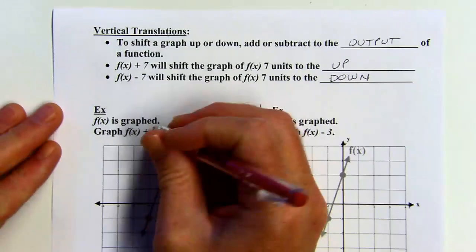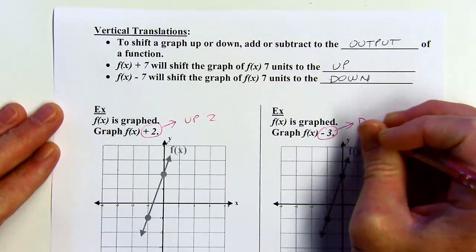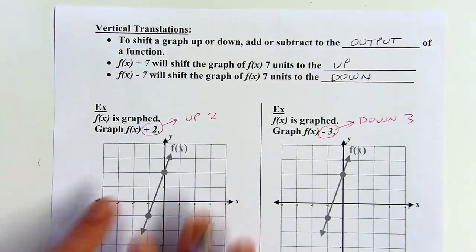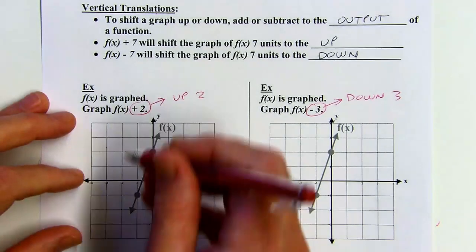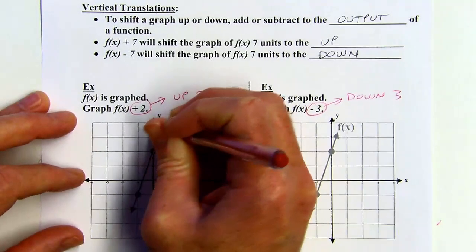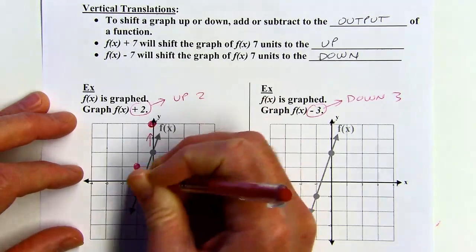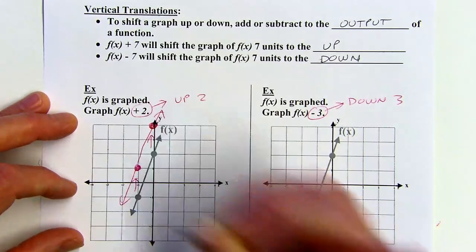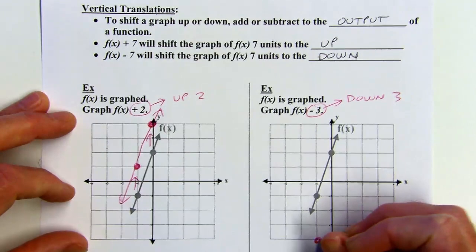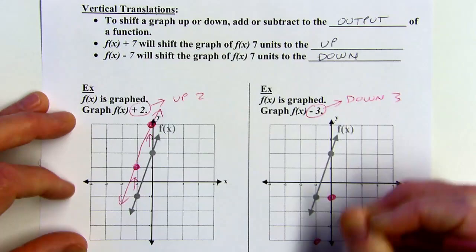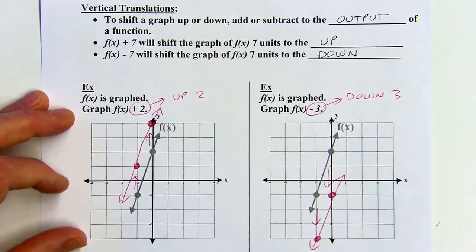Let's try this. With the plus 2 here, everything's going to move up 2. With the minus 3, everything's going to move down 3. I'll take the marked points and shift them. For the plus 2: I shift this point up 2 units and this one up 2 units — that's what the line looks like after shifting up 2. For down 3: 1, 2, 3 — just enough room — 1, 2, 3 — then connect the dots. There's my new line shifted down 3 units.